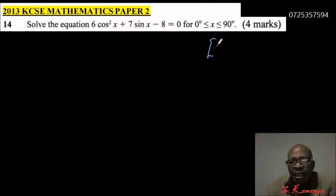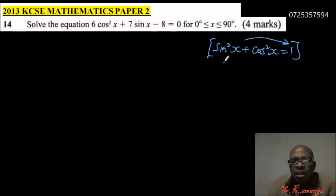You learned that sin²x + cos²x = 1. This is an identity. If we want, we can take sin²x to the other side, so you have cos²x. Once it goes to the other side it becomes minus, so it is 1 - sin²x.